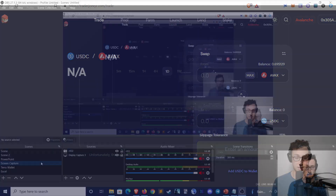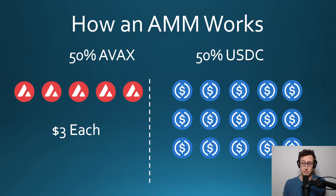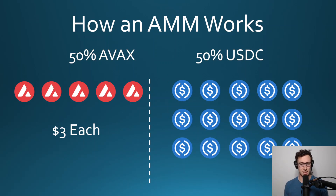Let's add a bit more color to that. Say we have a pool that is AVAX and USDC. In this example we'll say AVAX is $3 for the sake of simplicity. Each half of the pool has to be balanced — 50/50, since that's the most common. So in this initial starting state, the pool has five AVAX and 15 USDC. 15 divided by five is $3, so there's $3 per AVAX. This tells the pool: if someone wants to buy some AVAX, they can deposit three USDC and receive one AVAX, although it won't work out exactly like that as we'll see in a second.